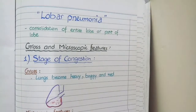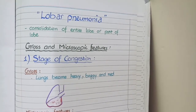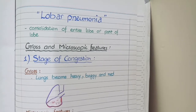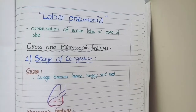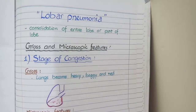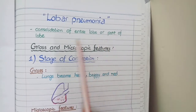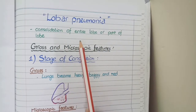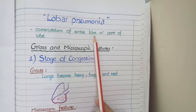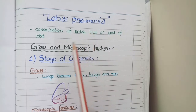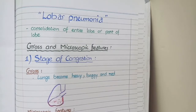In this video, we will discuss the pathological features of pneumonia. Based on the pattern of involvement, pneumonia is classified into two types: lobar pneumonia and bronchopneumonia. In lobar pneumonia, the pattern of involvement is such that one complete lobe or one part of a lobe is involved. As the pathological changes are confined to lobes, we call this lobar pneumonia. Lobar pneumonia itself has four stages.